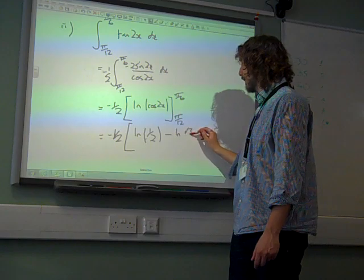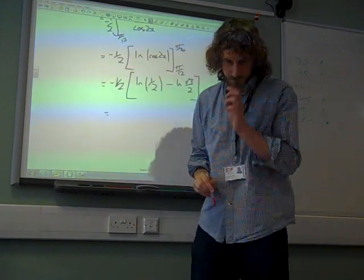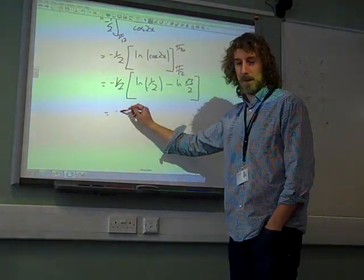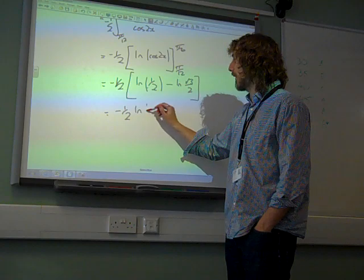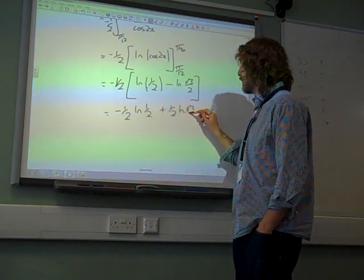Minus the natural log of root 3 over 2. There we go. It's like that. I think. Yep. So we've got minus a half ln a half plus a half ln root 3 over 2.